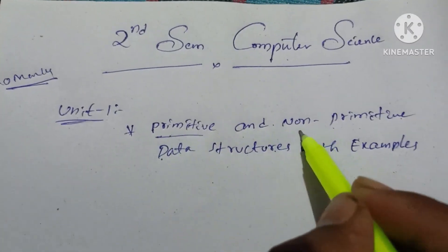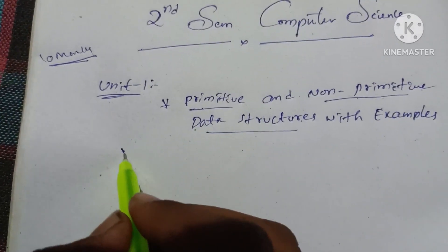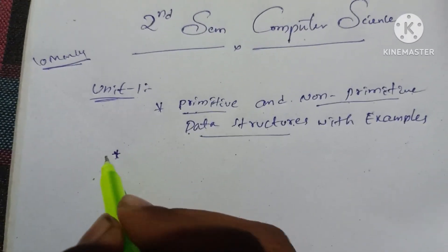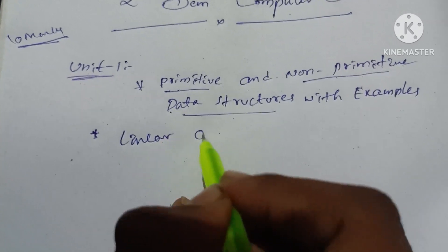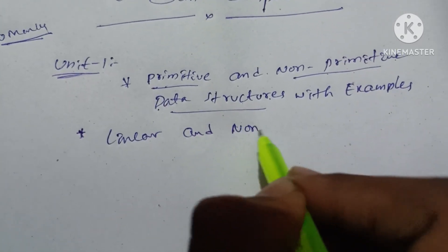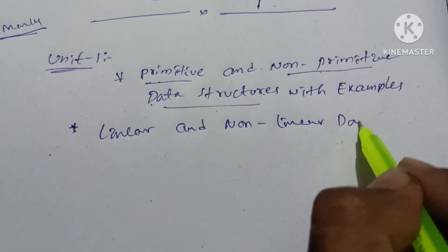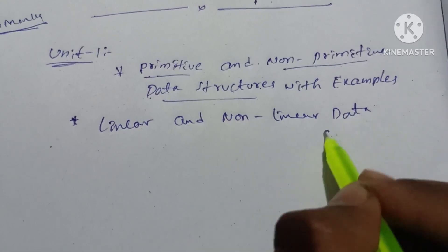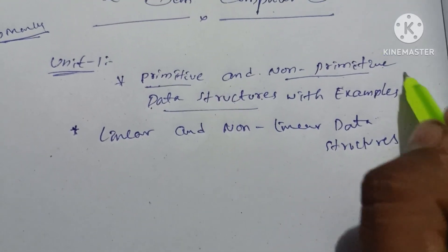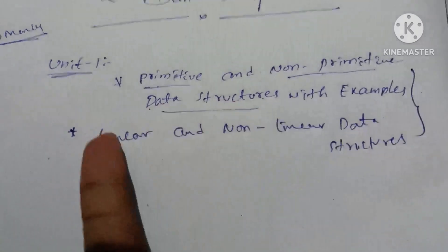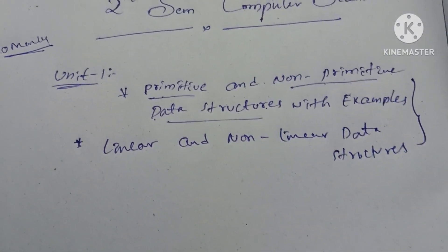The main question is primitive and non-primitive data structures. The second question is linear and non-linear data structures. You can use these two methods for the first unit. This is worth 10 marks.